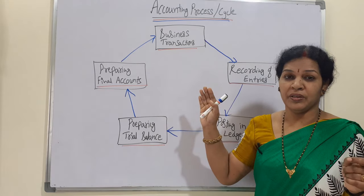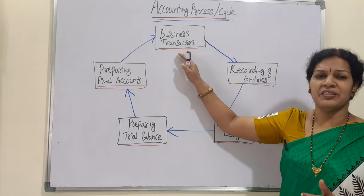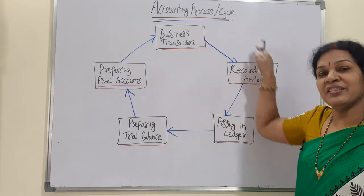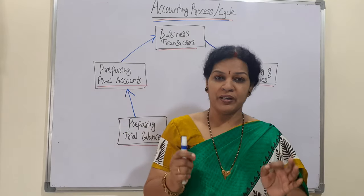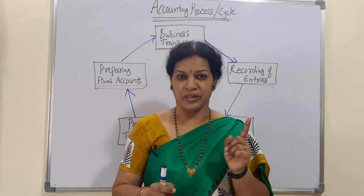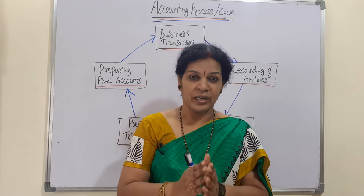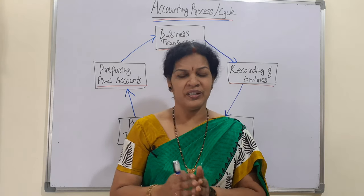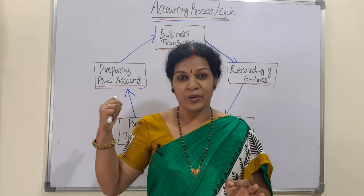This is the final stage of the accounting process. Once it is complete, the cycle starts again — business transactions, journal entries, ledger posting, trial balance, and final accounts. This accounting cycle is prepared for a particular period. Most business people follow one year, either January to December, or the financial year April 1st to March 31st, or some follow mid-year periods.